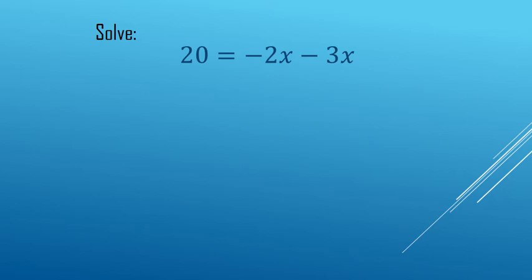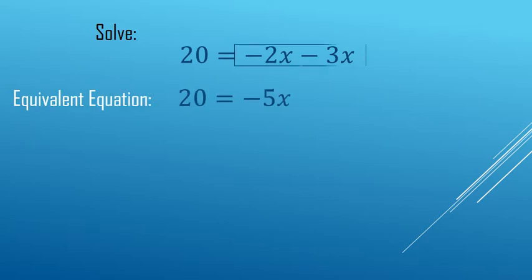The first thing we need to do when solving this equation is clean it up a little bit, or add like terms. So 20 equals, on the right hand side I got negative 2x minus 3x, that makes negative 5x. Now we need to undo the negative 5 being multiplied by x, so we're going to divide both sides by negative 5.